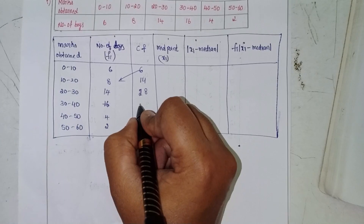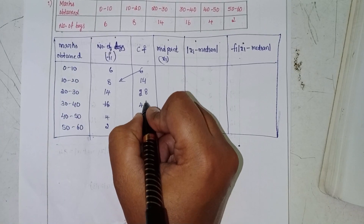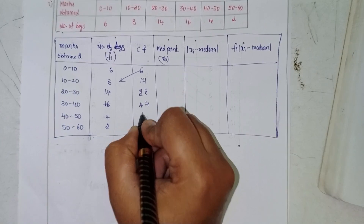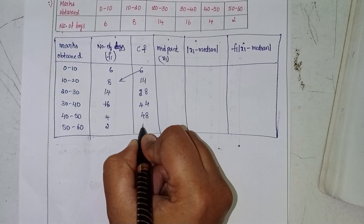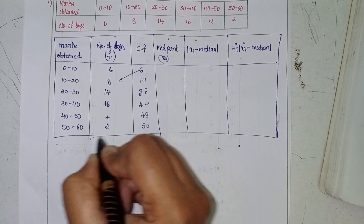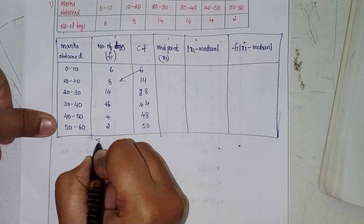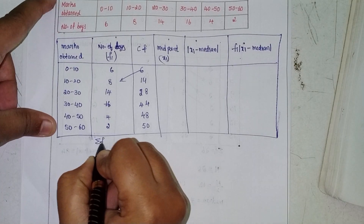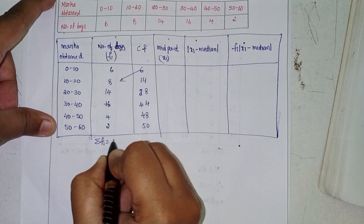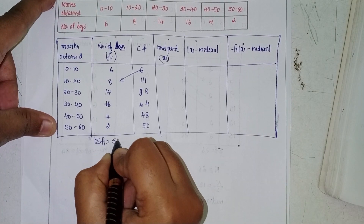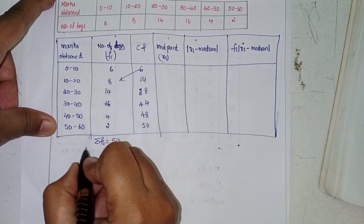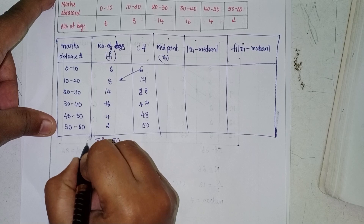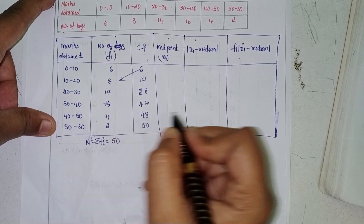Next cumulative frequencies: 28, 44, 48, 50. Summation fi is equal to 50. This is n.